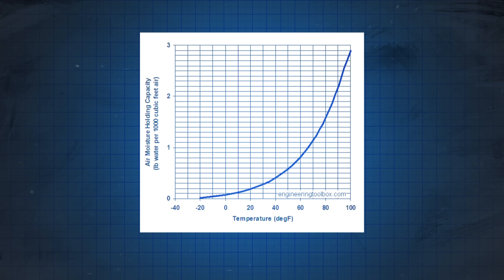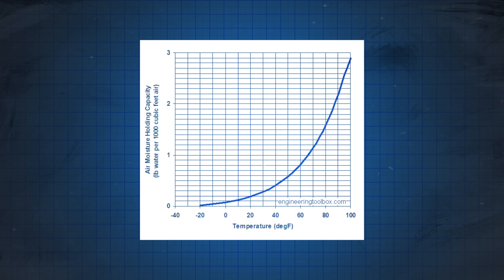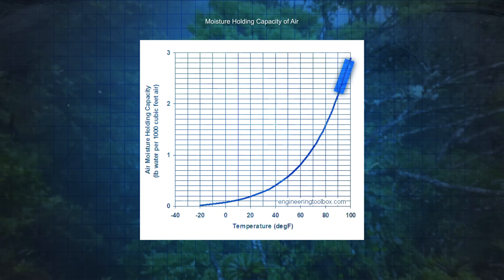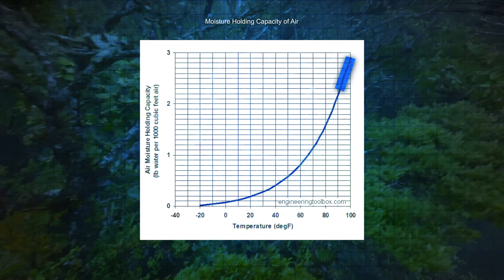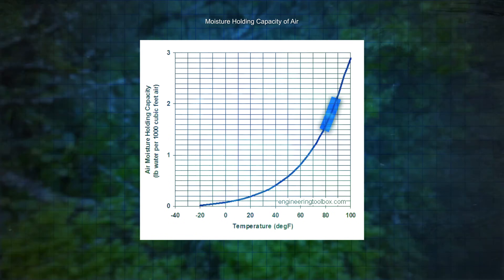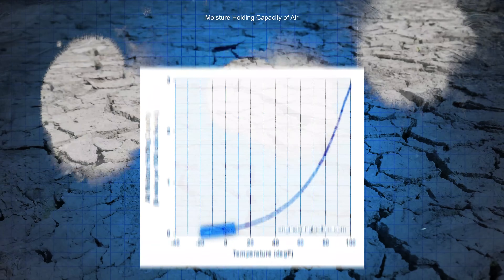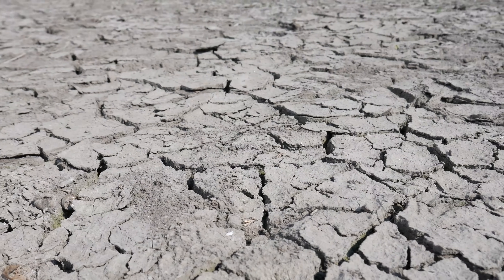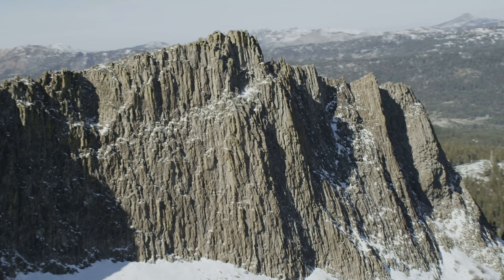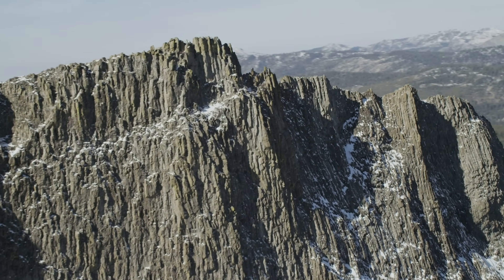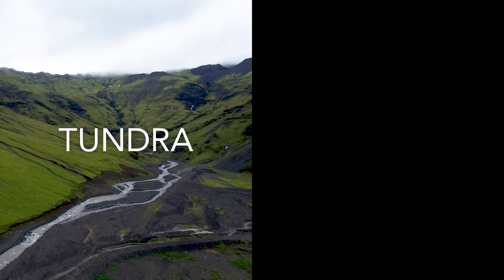The trick to understanding the Earth at this time is to understand this graph. Here, we can see the air's capacity for moisture in relation to temperature. The higher the temperature, the more water can be held by the atmosphere. Think of a place in the tropics, warm and humid. Therefore, the lower the temperature, the drier the atmosphere becomes, meaning the last glacial maximum, the coldest time in recent history, would have also been the driest period for the planet as well. That's why the major trend we'll see across the world was the expansion of tundra and deserts.